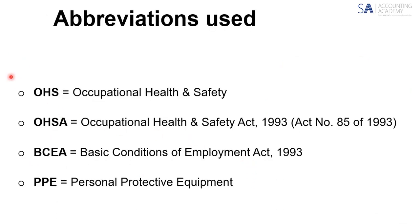Looking at the abbreviations used in the slides: OHS is occupational health and safety, OHSA is the Occupational Health and Safety Act of 1993, BCEA is the Basic Conditions of Employment Act, and anywhere PPE is mentioned — even inside the consolidated directives — it refers to personal protective equipment, not property, plant and equipment as we are used to seeing as auditors and accountants.